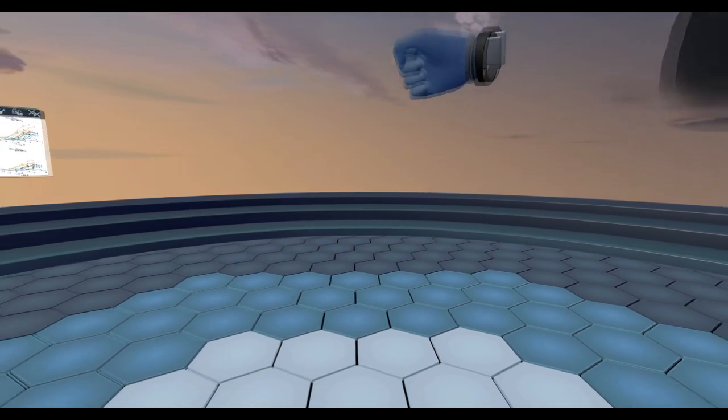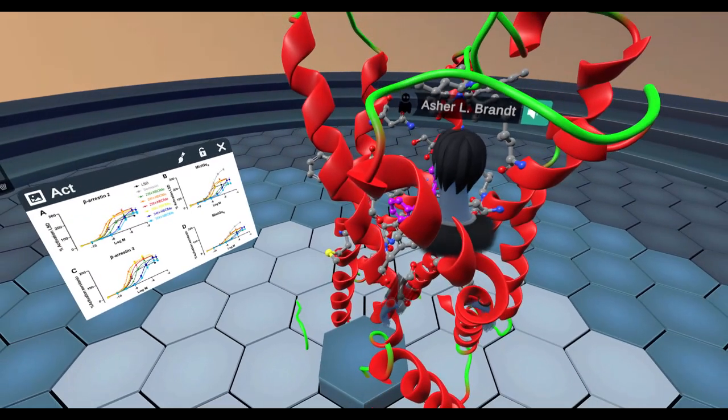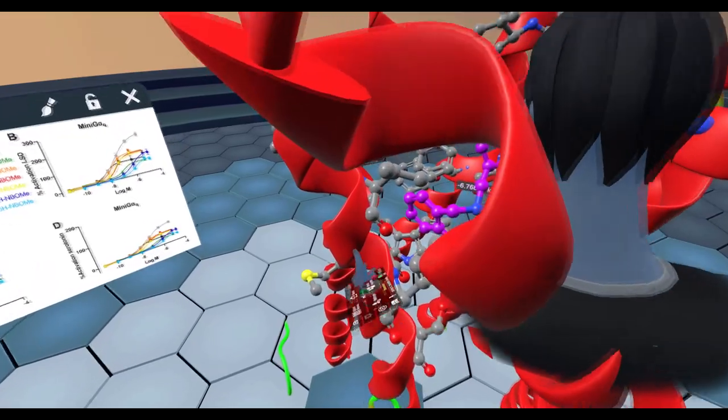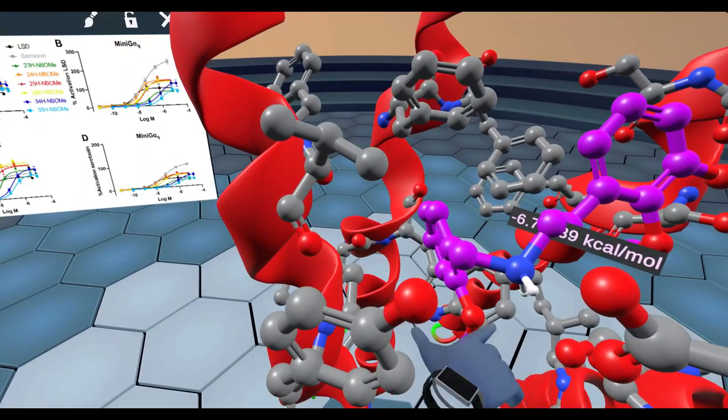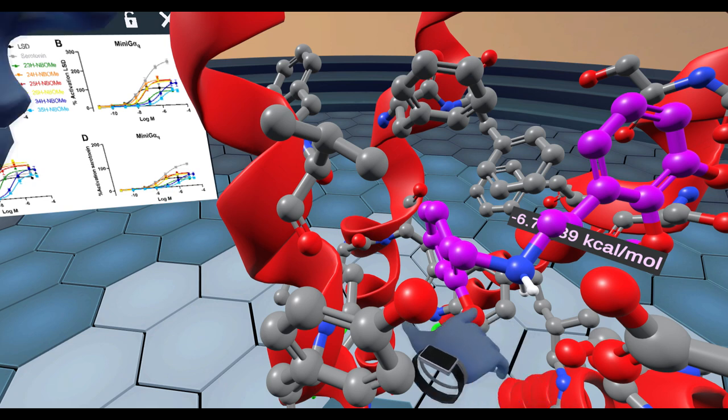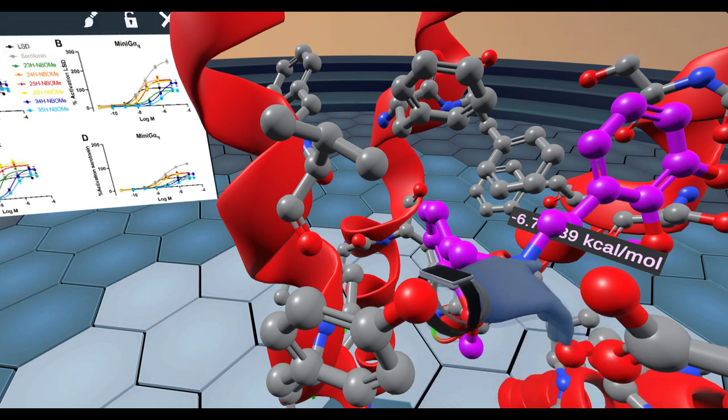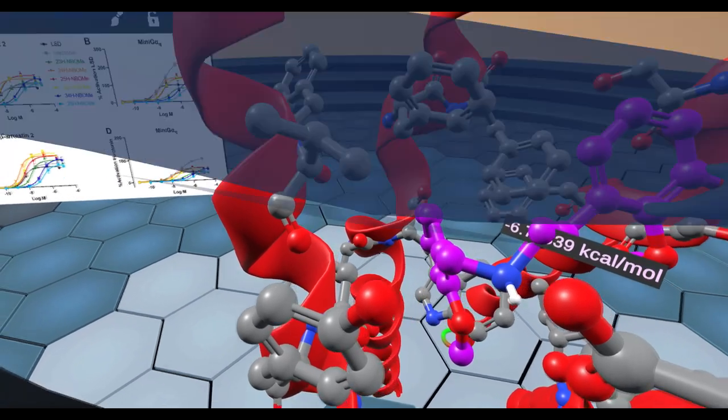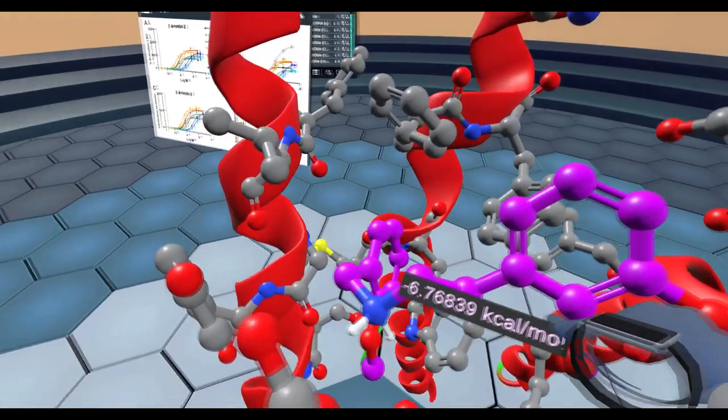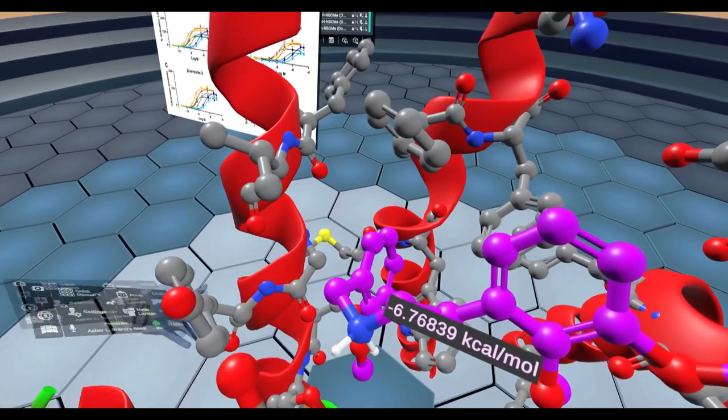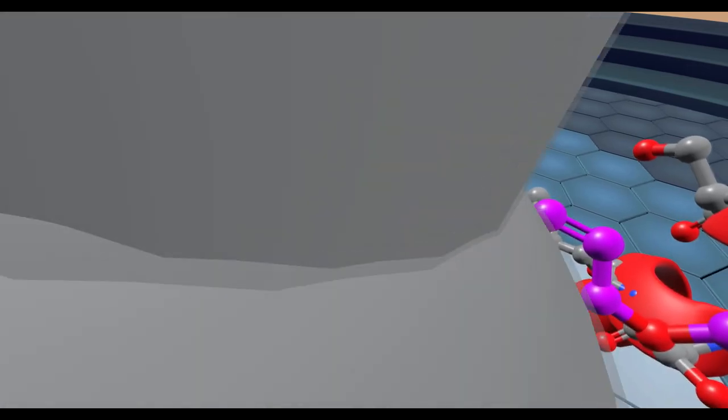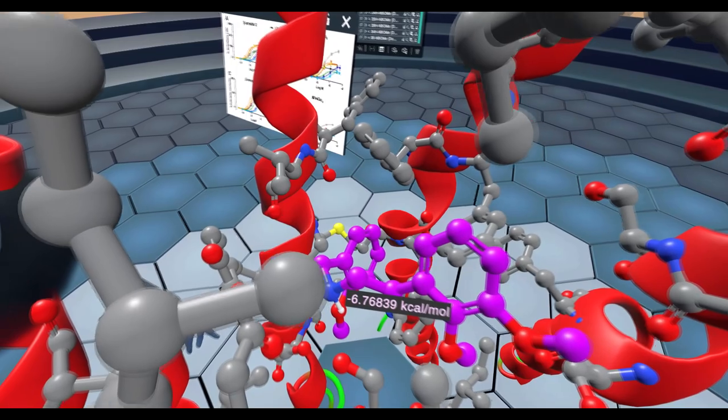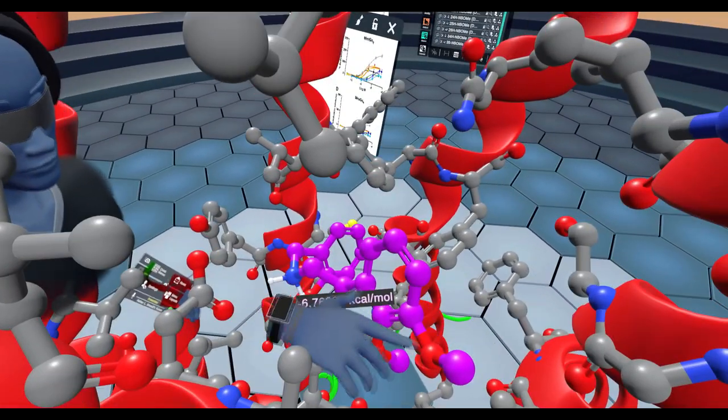So now let's look at how these dock to serotonin 2A receptor. This is 23H-NBOME bound to serotonin 2A crystal structure and we would see the same interactions that we would see with 25CN-NBOH being the hydrogen bond right here and the salt bridge right here. And what's interesting about these compounds specifically is 2,3 has the methoxy groups next to each other.